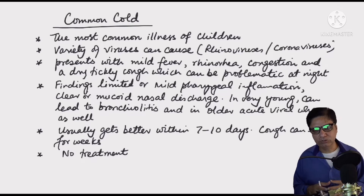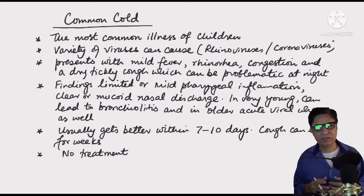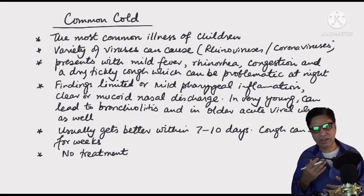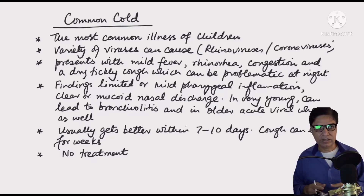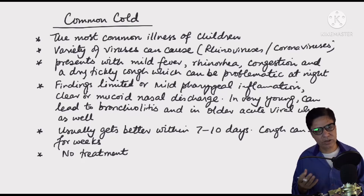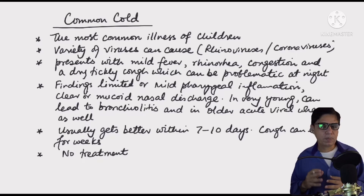On examination, findings are usually limited to mild pharyngeal inflammation — a non-specific, mildly erythematous pharynx or mild inflammation on the tonsillar pillars — along with clear or mucoid nasal discharge, which can sometimes have a slight yellow tinge. In very young kids it can lead to bronchiolitis, and in slightly older kids to acute viral wheeze. No treatment is necessary for common cold.